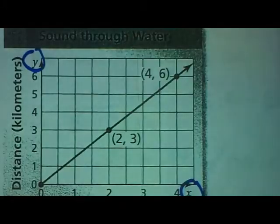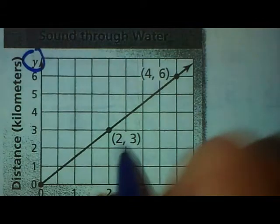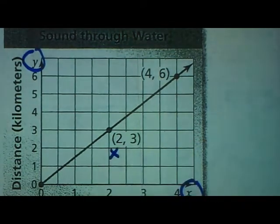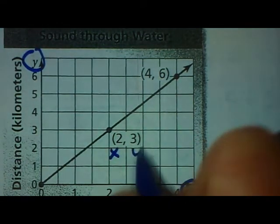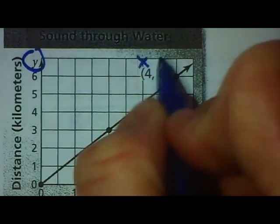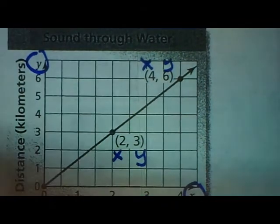Remember that in an ordered pair it's x, y. That means the first number in the ordered pair represents my x movement and the second number represents our y movement.